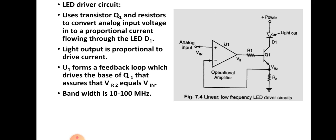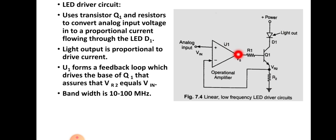The LED exhibits a peak drive current of 100 milliamperes, and the voltage drop is typically 1.5 volts. The op-amp U1 forms the feedback loop and drives the base of Q1, such that it assures that VR2 equals VIN — that is the main design constraint. Even though this circuit is used, there is some form of non-linearity associated with Q1. This circuit will achieve a bandwidth of 10 to 100 megahertz.